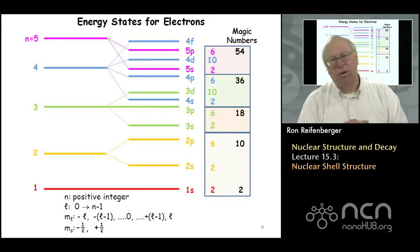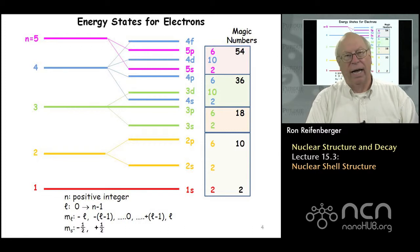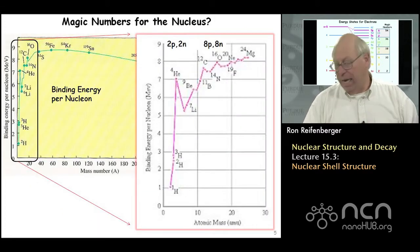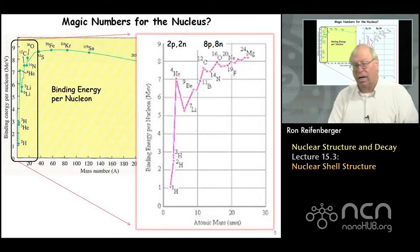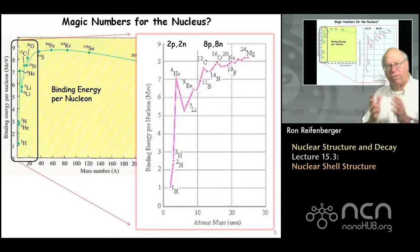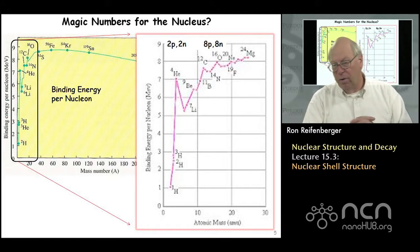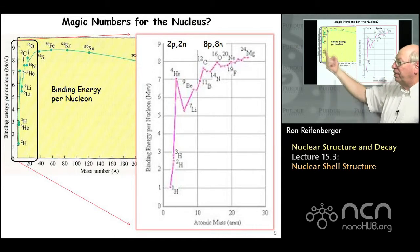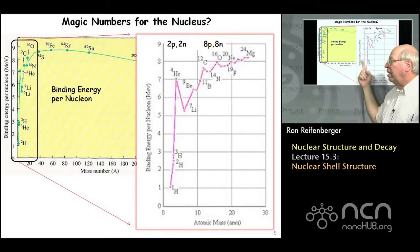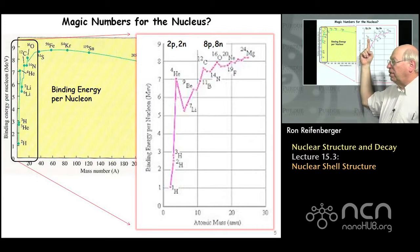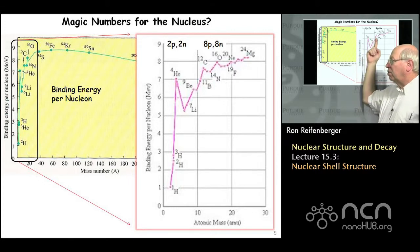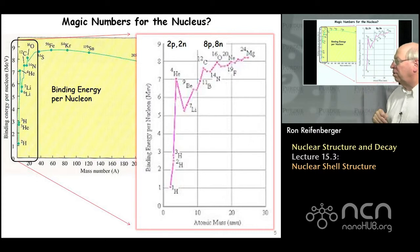The question is: can we make a similar argument based on the stability of nuclei that mirrors the argument made for electron states? We might begin by looking at the binding energy per nucleon — a curve shown in the previous lecture — and look for local regions of stability. If you blow up the rapid increase in binding energy per nucleon for light nuclei, it's easy to see that the helium-4 nucleus, containing two protons and two neutrons, has a local peak indicating greater stability than adjacent nuclei. There are smaller peaks for carbon-12 and oxygen-16 as well.